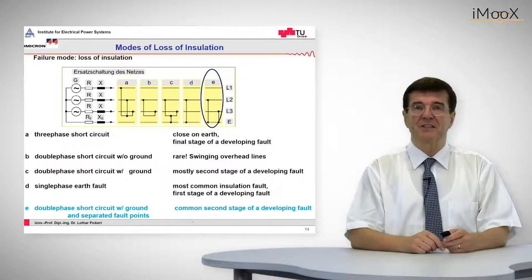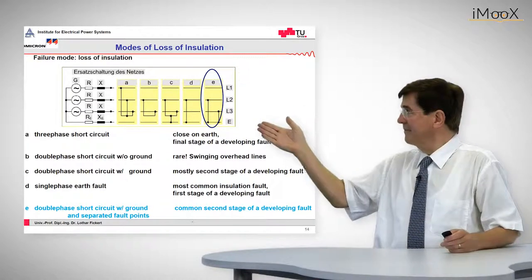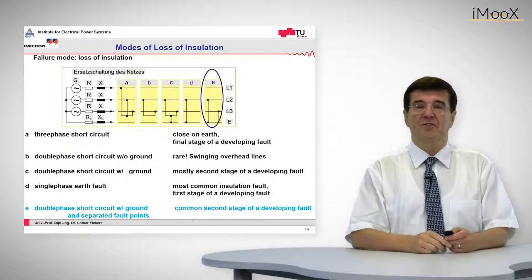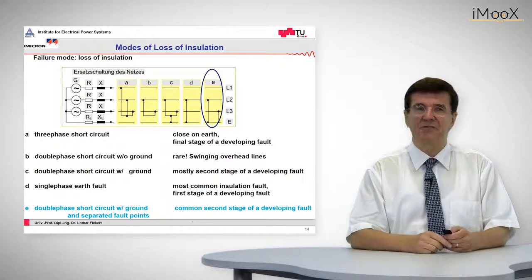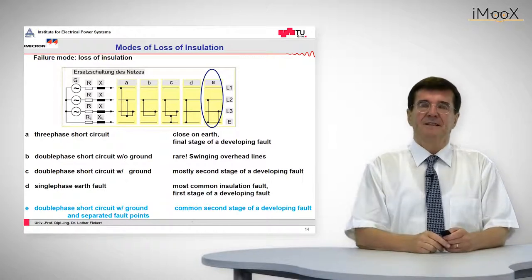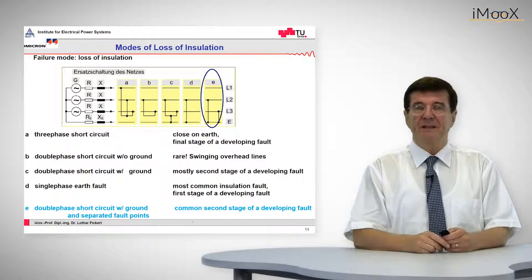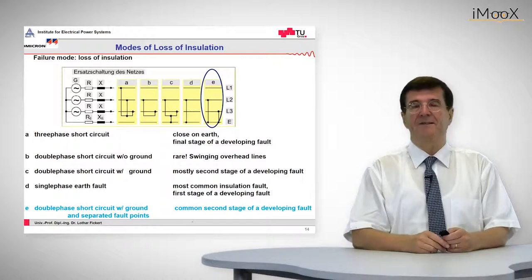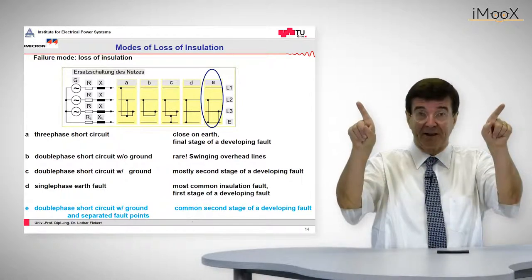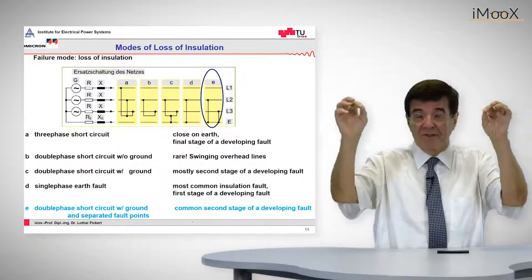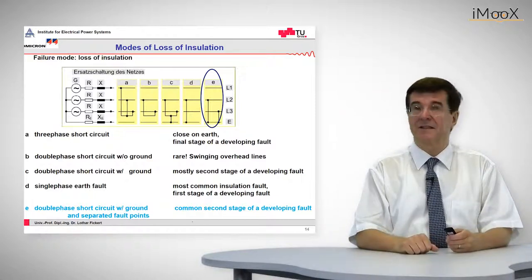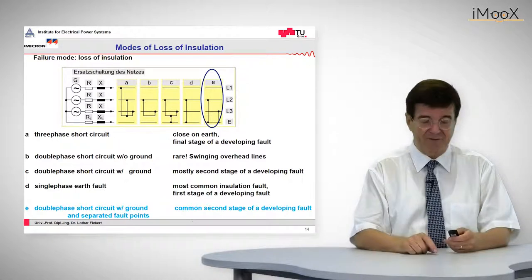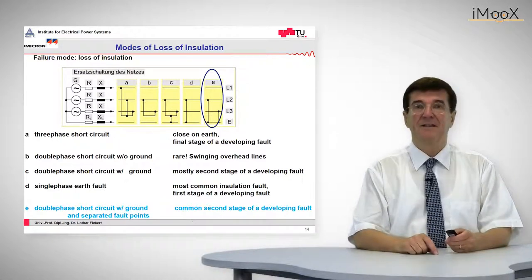The last fault, classified here as E, is the so-called cross-country fault. This is a double ground fault in two different phases. This situation occurs in many cases in the aftermath of a single-phase to ground fault, where due to the increase of voltages in the healthy phases, one of those healthy phases experiences another voltage breakdown — a second fault point in the grid at some other location and in the second phase. So this is called the cross-country fault.